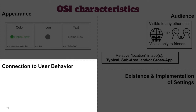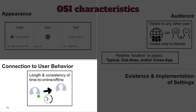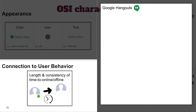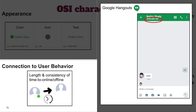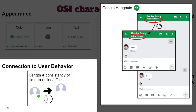How closely an OSI is connected to user behavior is determined partly based on how long and how consistently the timing is for people to show up as online or offline after they open or close an app. Continuing the example of Alice and Bob in Google Hangouts: when Bob stops using the app, after about 15 minutes his typical OSI will change from 'active just now' to 'active 15 minutes ago.' If he opens the app again, it takes just a few seconds for the OSI to update back to 'active just now.' His sub-area OSI, whether he's leaving or entering the conversation view, will update within just a few seconds — quite different from the typical OSI's behavior.